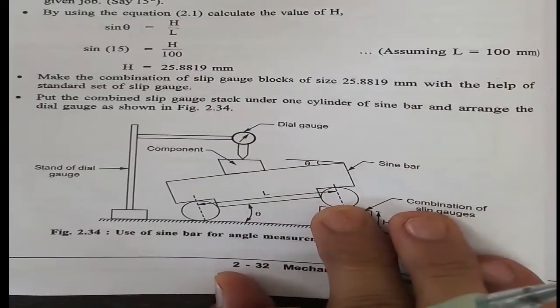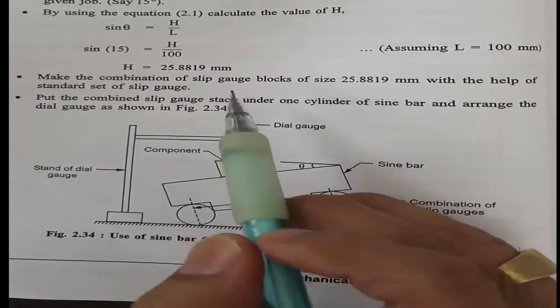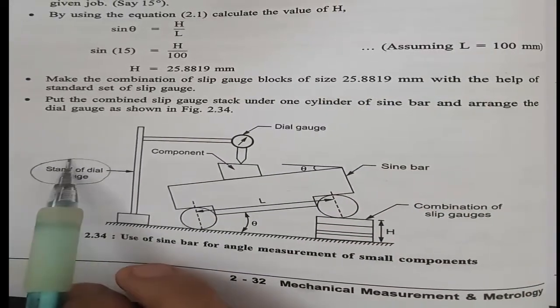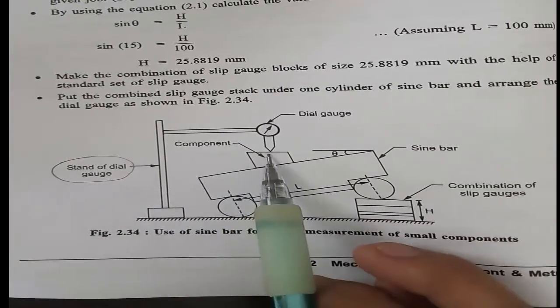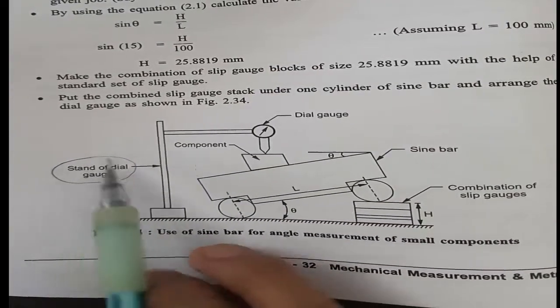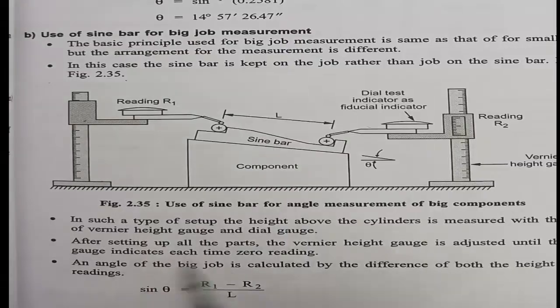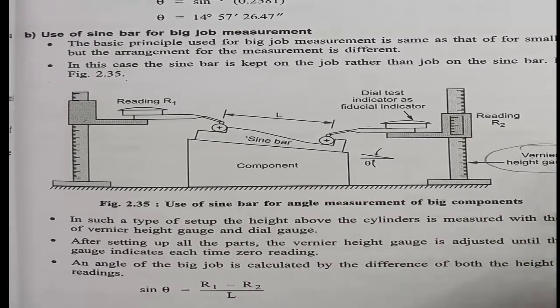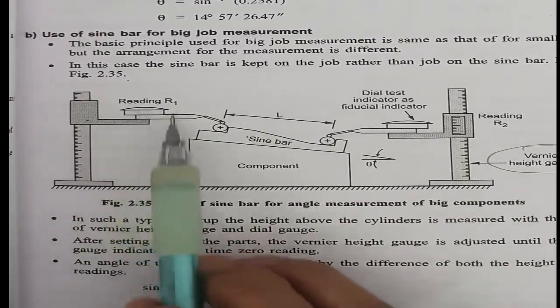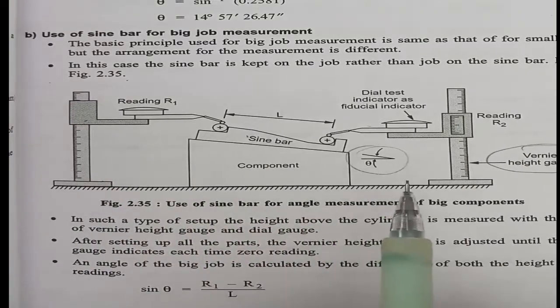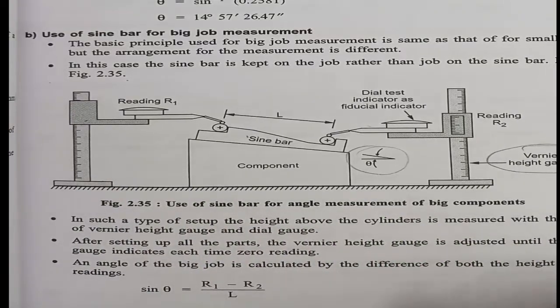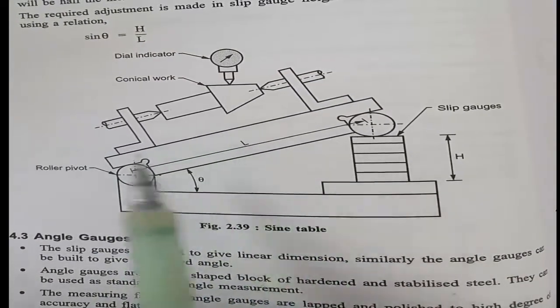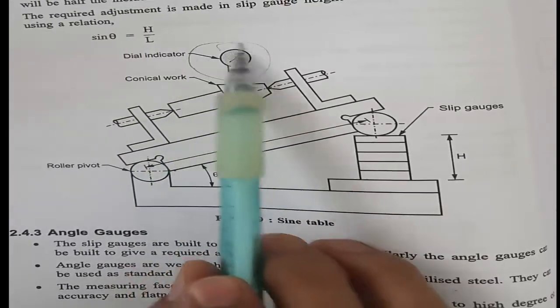Here are different applications of the sine bar: sine bar with dial gauge, sine bar with vernier height gauge, and sine bar with dial indicator for measuring the angle. Different ways of using sine bar are given.